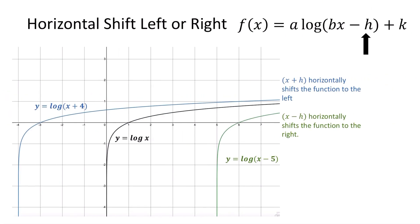We can shift the graph horizontally left or right. Remember, if it looks like a plus sign inside our log, that is going to be shifted to the left. So the log of x plus four, which is the graph in blue, shifted four units to the left. If we have a minus sign inside the log, it's going to be shifted to the right. So the green graph, the log of x minus five, is shifted to the right.